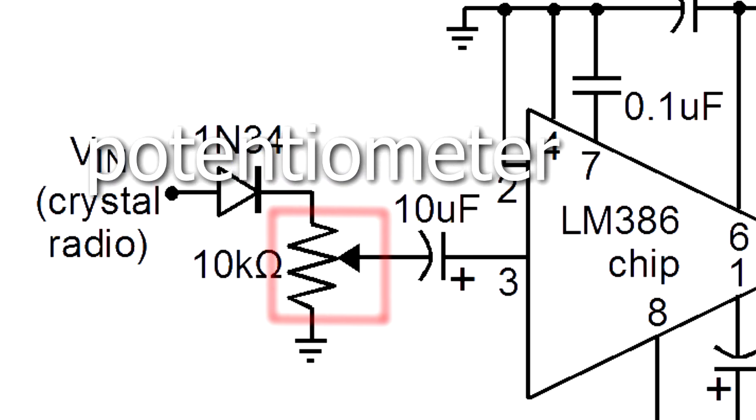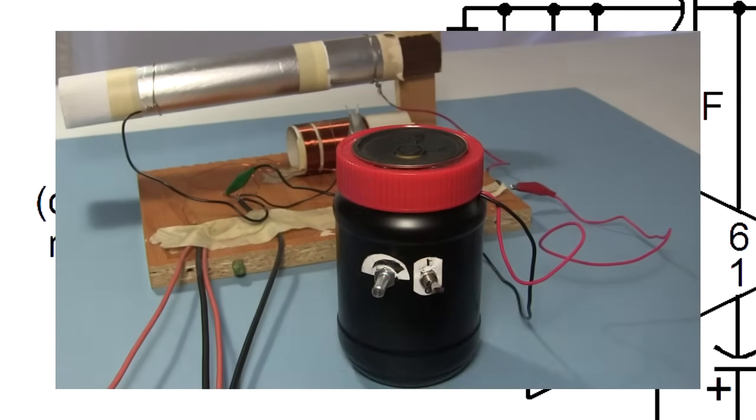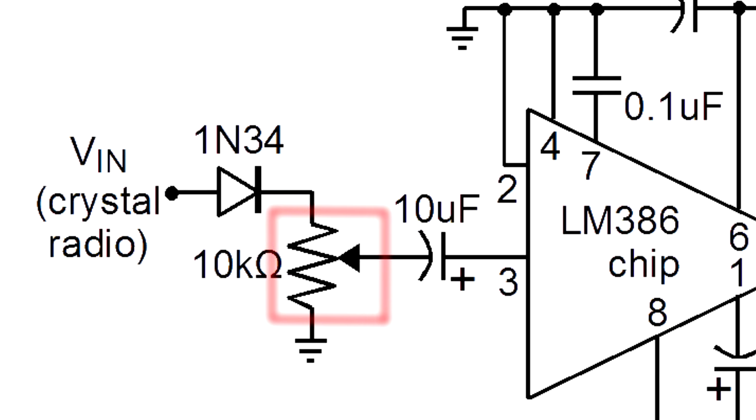This is a resistor that you can adjust, called a potentiometer. In my crystal radio amplifier I use it to adjust the volume. Its symbol is the same as a resistor with a fixed value, like in our simple circuit, but with an arrow pointing to it. Remember that in the international standard, a rectangle is used for the resistor, so the potentiometer looks like this.